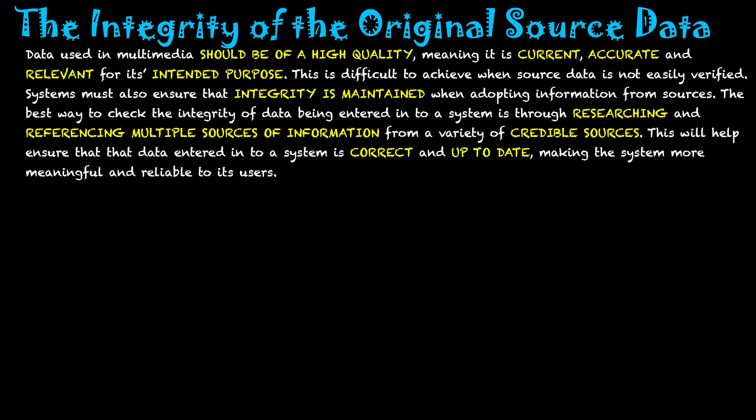How do I know that the data I'm getting from my system is actually correct? I need to think of some sort of process in order to achieve this. The system also needs to ensure that integrity is maintained when adopting information from its sources. If I choose to use correct information, I can't change it in a way that makes it incorrect — I need to maintain the integrity of that source data when it is used in my system.